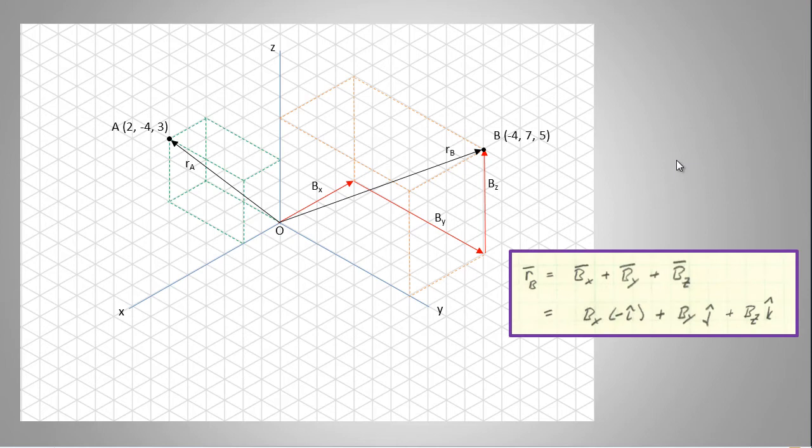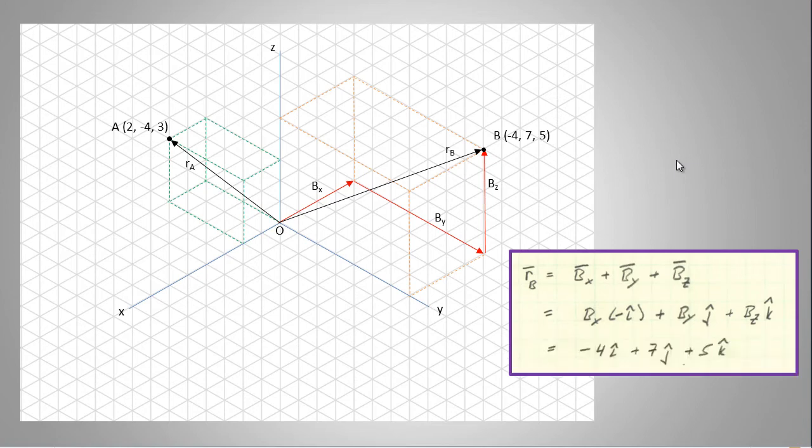And again, these Cartesian components are made up of a magnitude times the direction, and the directions given by the unit vectors are either positive or negative. In the case of BX, which points in the negative X direction, it is assigned a negative I unit vector. The magnitudes are read directly from the Cartesian coordinates, so vector RB equals -4I + 7J + 5K.